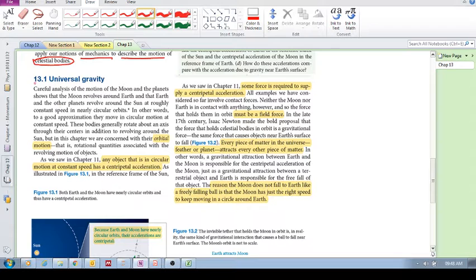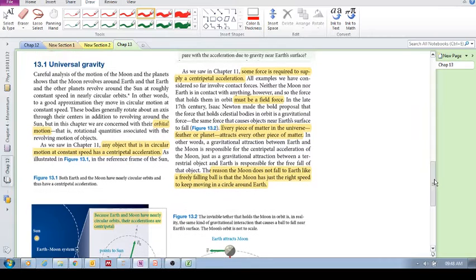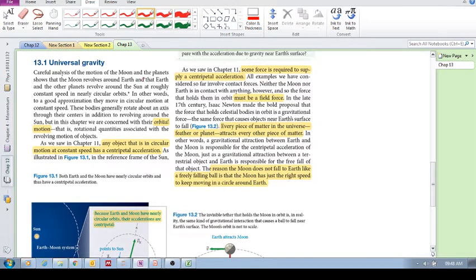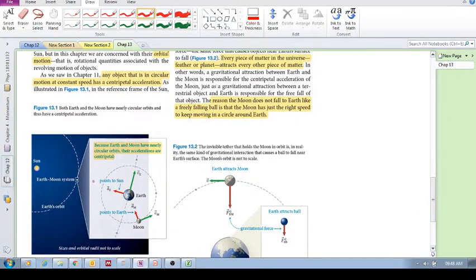We come to universal gravity. The moon revolves around the Earth, and the Earth revolves around the sun. What they found is that the Earth-moon system revolving around the sun is approximately circular motion, so it revolves in a circular way, the same as the moon also revolves around the Earth in an approximately circular path.